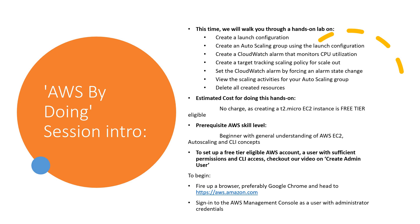To begin, fire up a browser. To set up a free tier eligible AWS account, a user with sufficient permissions and CLI access, check out our video on create admin user. To begin, fire up a browser, preferably Google Chrome, and head to aws.amazon.com. Sign in to the AWS Management Console as a user with administrator credentials.